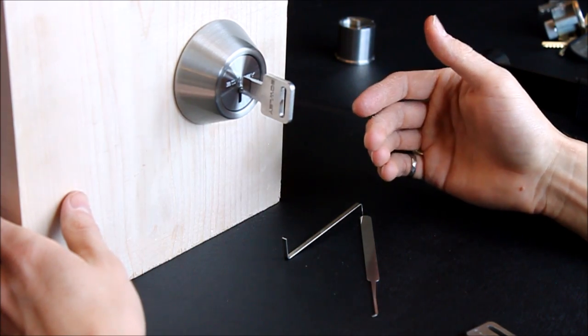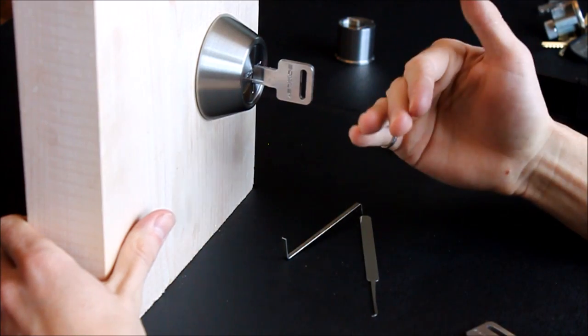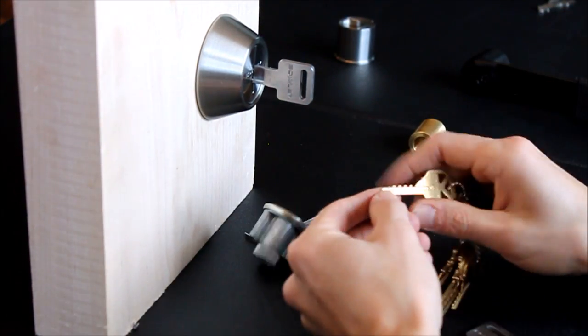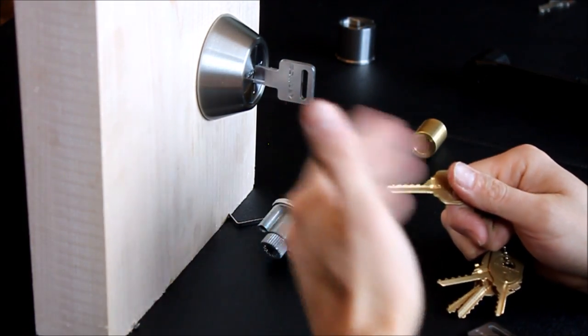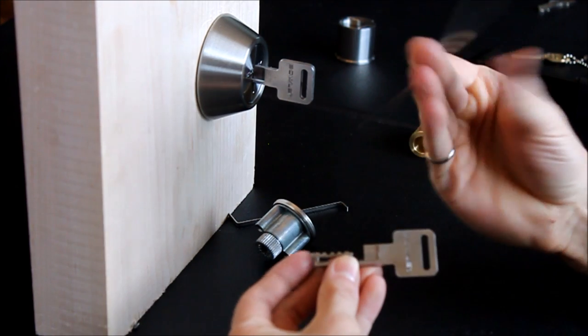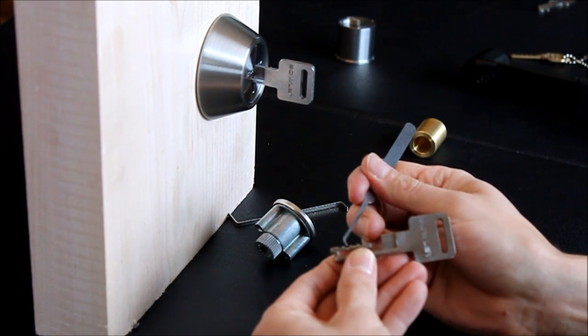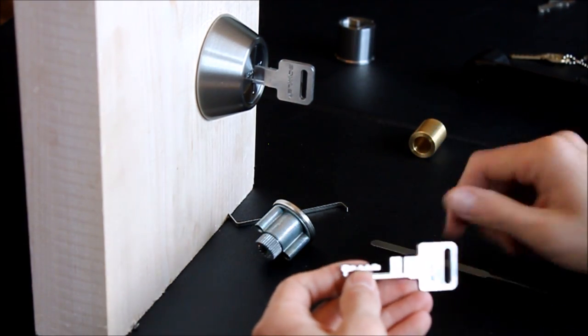And thirdly, we only move 70 thou. In order to make a bump, a bump has to be a significant size on the key. We're moving essentially under half of what a normal key does. We're going from the top of the key into the bidding. A bump key would go from one bidding to another bidding. So we don't have the distance, really, to make a significant bump.